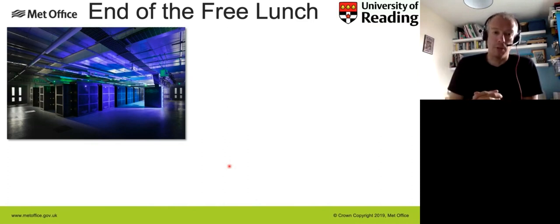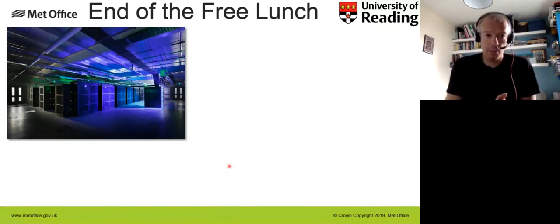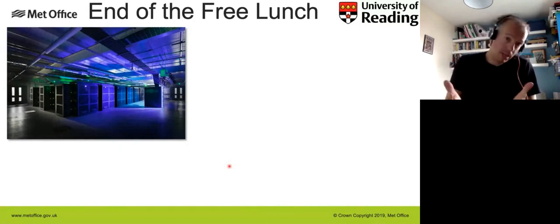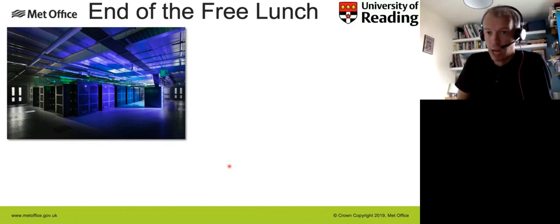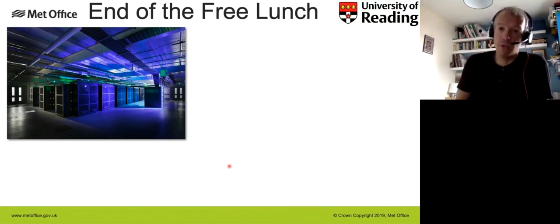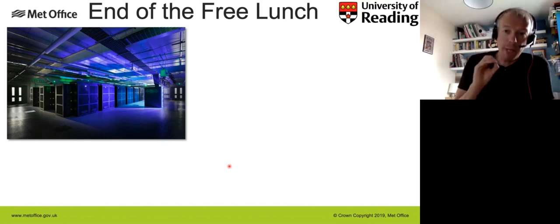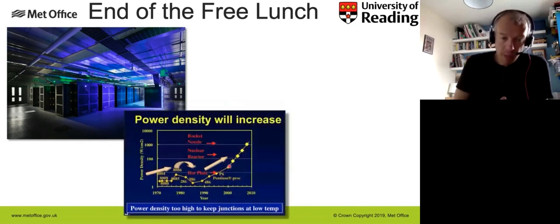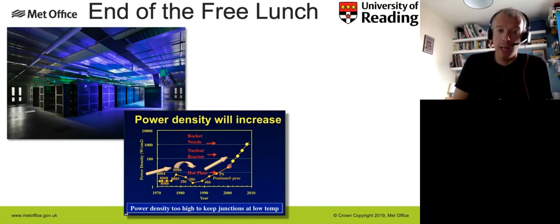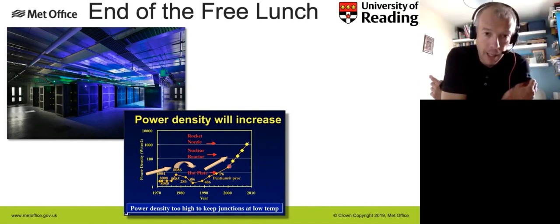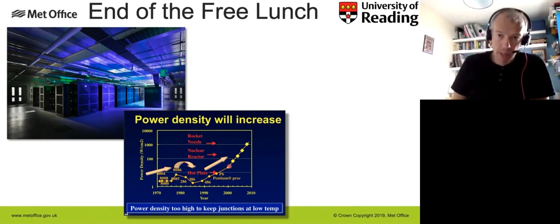Instead of a faster computer, we now have a bigger computer. This is the Met Office supercomputer — a Cray XC40 — lit up for some reason, presumably to look cool. It has a quarter of a million Intel Xeon Broadwell cores, and when it was first installed it was number 11 on the TOP500 list. It consumes three megawatts of power just for the machine itself. We have this massively parallel machine rather than a single very fast processor because of the limits we've hit in silicon electronics.